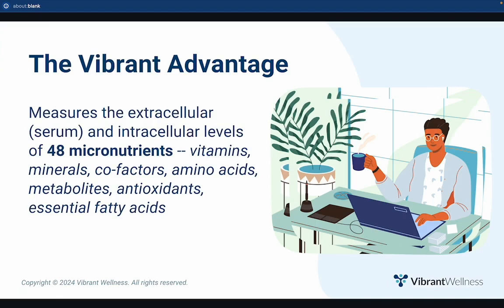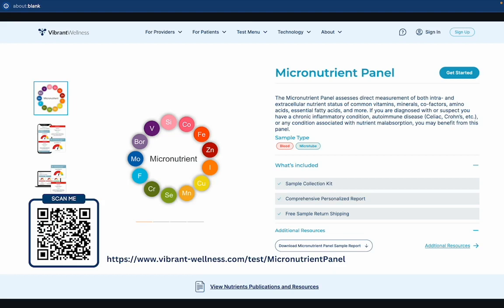In conclusion, the Vibrant Micronutrient Test measures 48 vitamins, minerals, cofactors, amino acids, metabolites, antioxidants, and essential fatty acids, helping you uncover the root of your patient's symptoms so you can create personalized treatment plans to resolve nutrient deficiencies, address chronic conditions, and improve their lifestyle. To learn more, visit the link in the video description. You can also use the QR code or URL on this page to visit us. If you have any questions, please ask them in the comments below. Thanks for watching, and I hope you have a vibrant day.